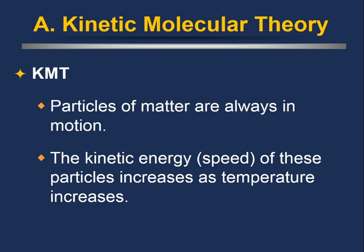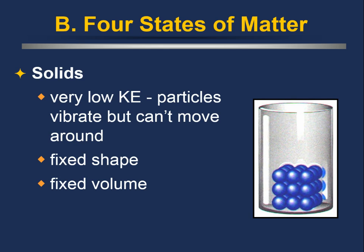There are three common states of matter, and actually four that we can describe fairly easily. Solids have very low kinetic energy. The particles are in a fixed shape and a fixed volume — they cannot move around; they're fixed together and very static. However, the particles are still moving: they vibrate around a fixed point, but they can't break that particular structure.